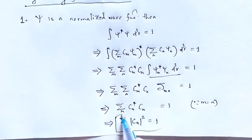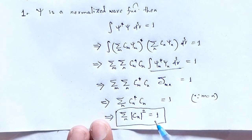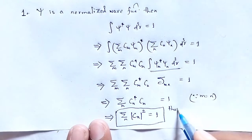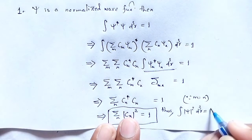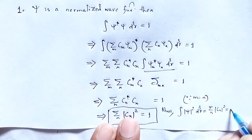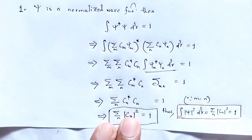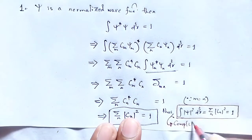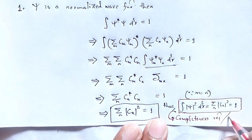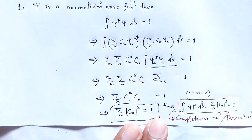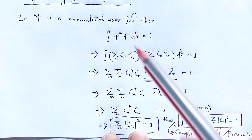Since summation over n of |C_n|² equals 1, we can write: the integral of the magnitude of psi squared dqr equals summation over n of the magnitude of C_n squared equals 1. This relation is known as the completeness relation, or alternatively it can be written as Parseval's formula or Parseval's relation. This is the first physical significance of the expansion coefficient C_n.